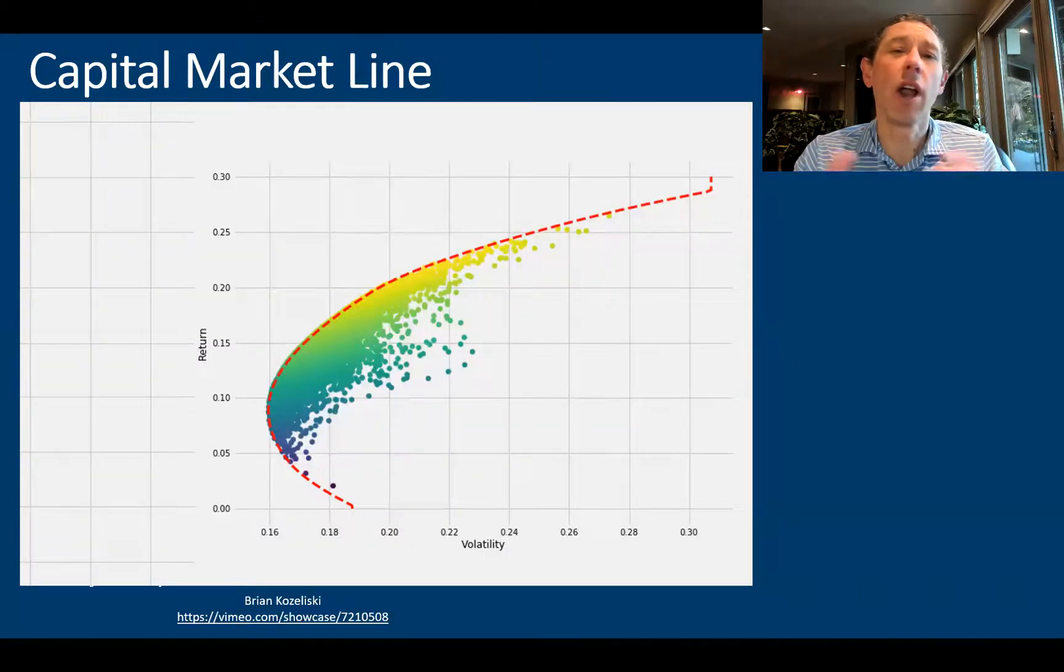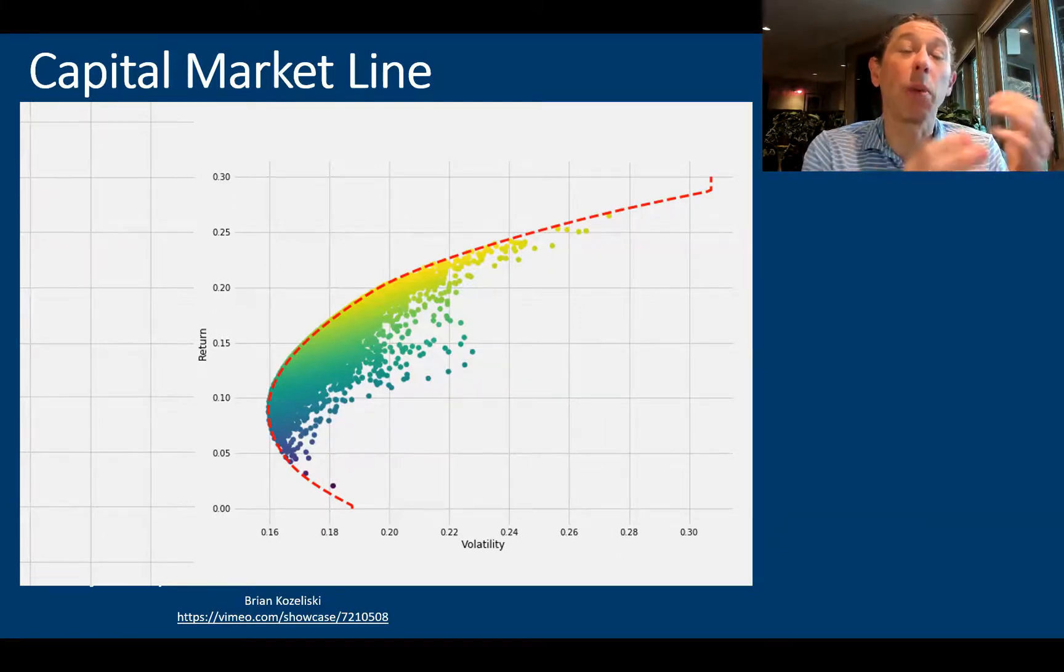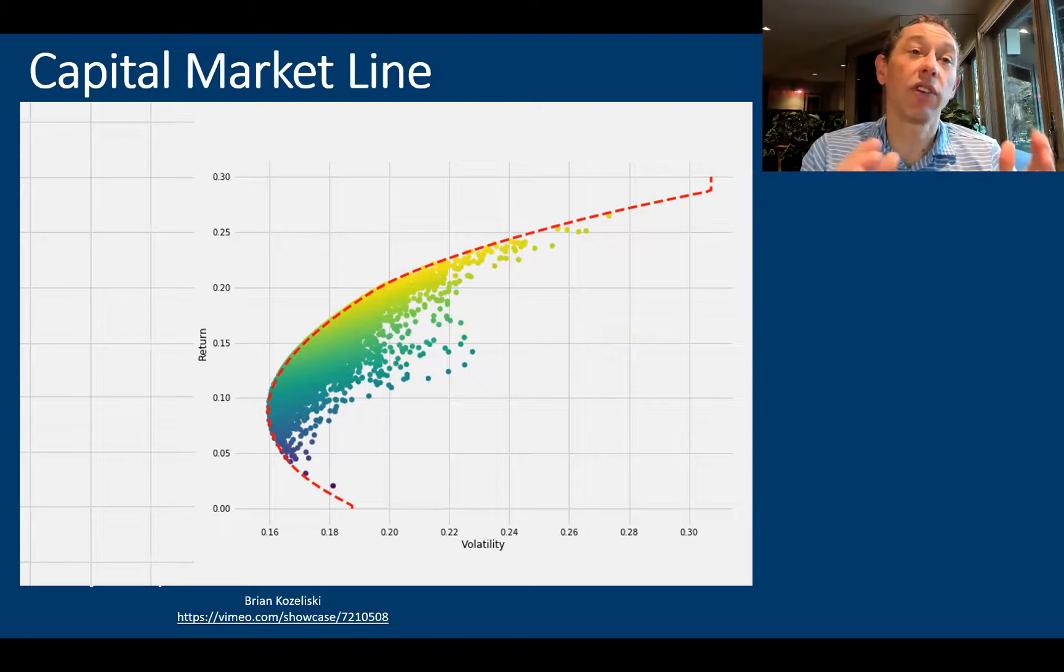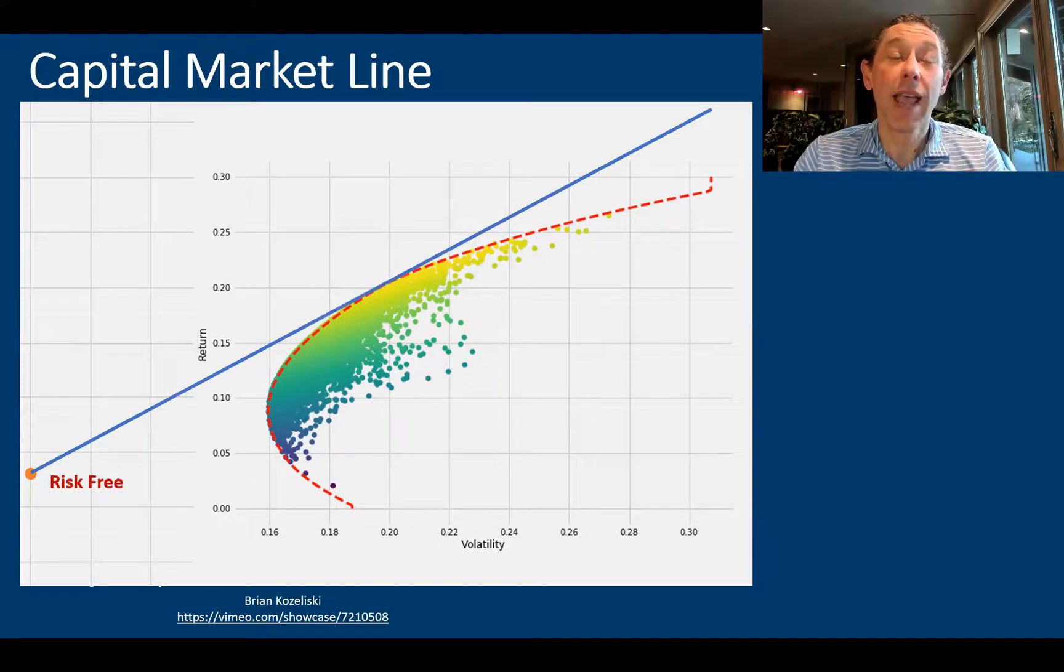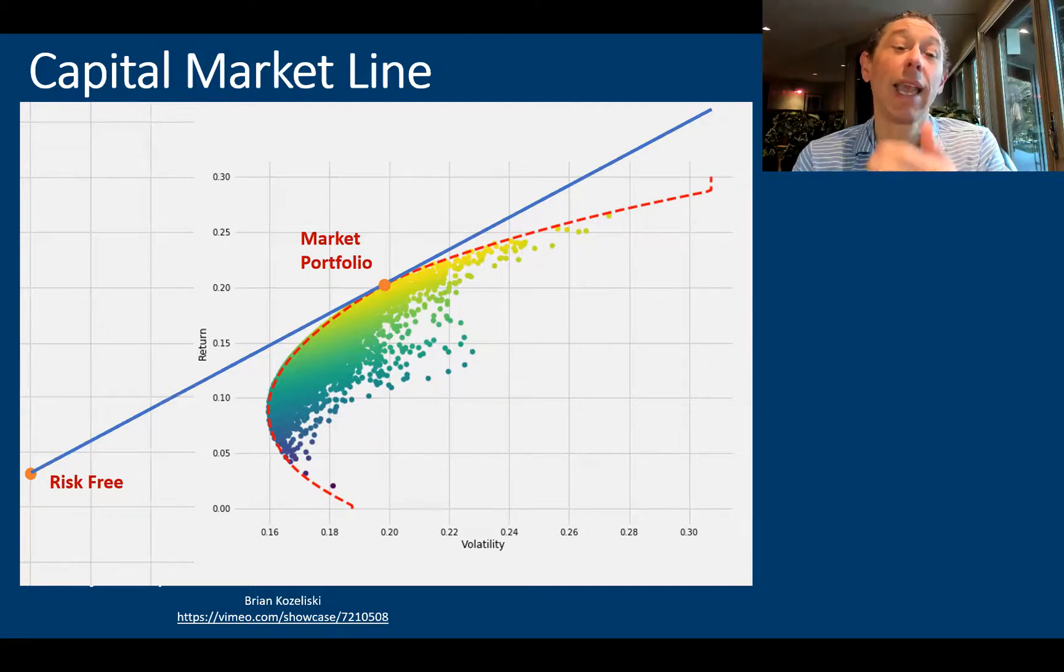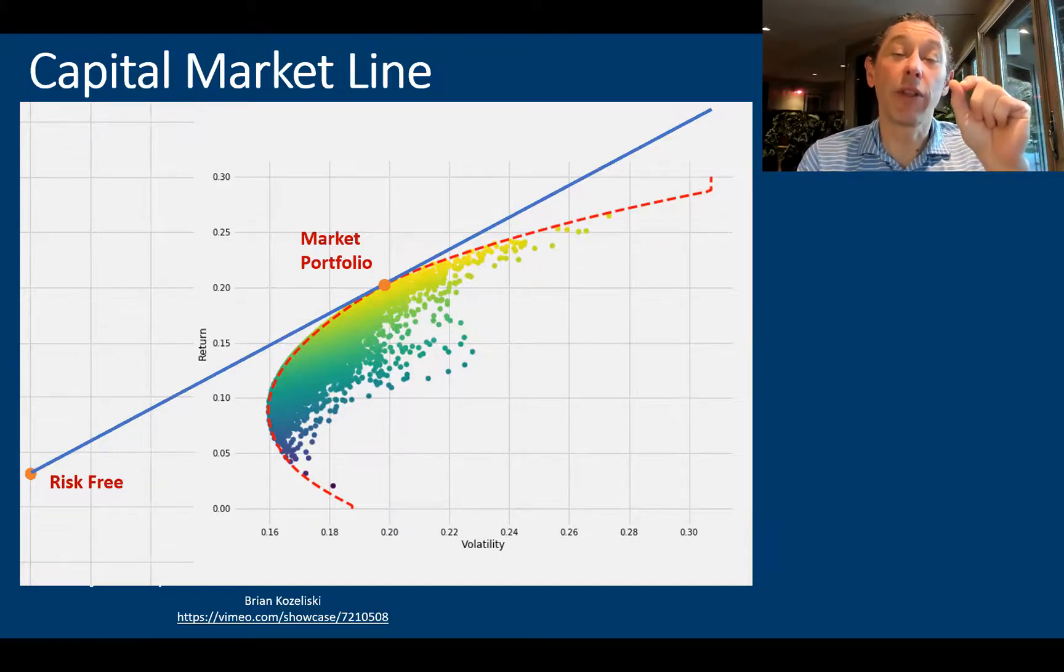If we were to consider all the risky assets out there and combine them in different ways and look at their returns, we would get a bunch of plots like this. And we end up with this thing called the efficient frontier. We're not going to get into the efficient frontier today, but these are basically the portfolios that have the best risk and return trade-off. This is the efficient frontier. Now, we're going to again introduce the risk-free rate. We're going to say this at 3% here. And we're going to just draw a tangent line to the efficient frontier. It's going to look something like this. And where that touches, that is called the market portfolio. So the capital market line is a special case of the capital allocation line where we're using this particular market portfolio.